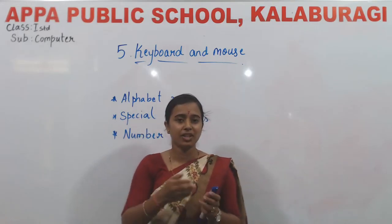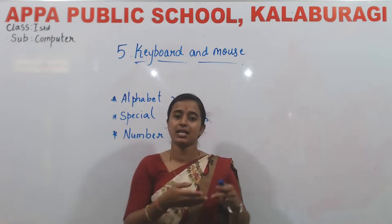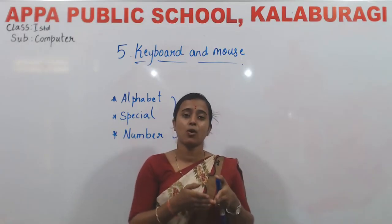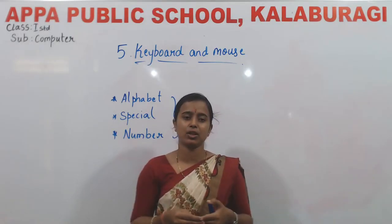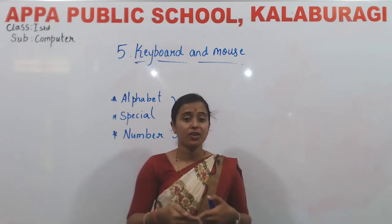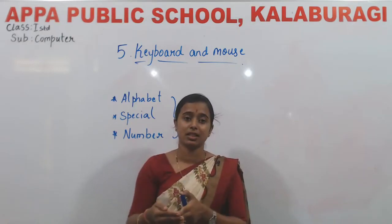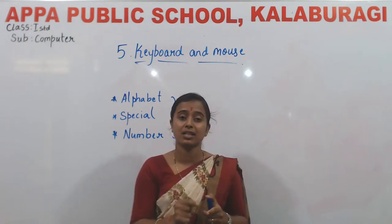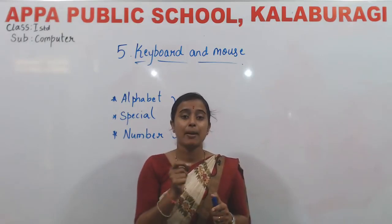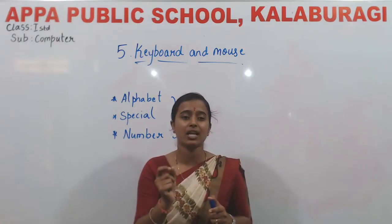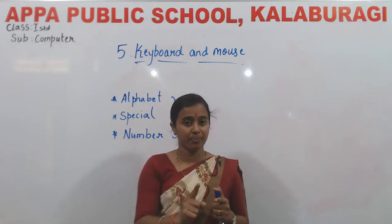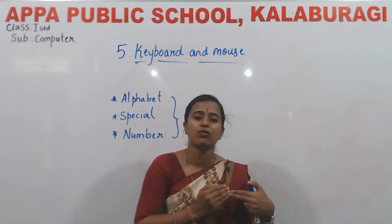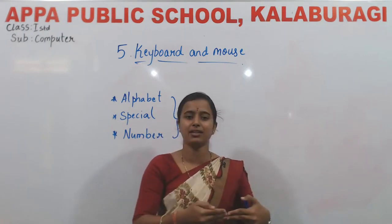We have different special keys. Enter key, backspace key, caps lock key. Backspace key will erase from the left side. When we press the enter key, the cursor — which is the blinking vertical line you see when you start to type — will move to the next new line. That is the use of the enter key.